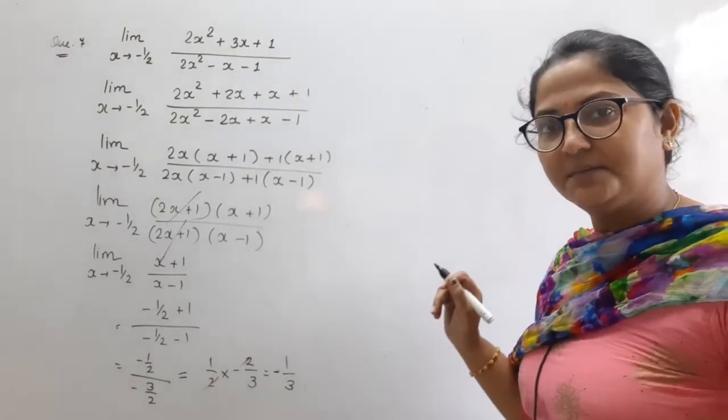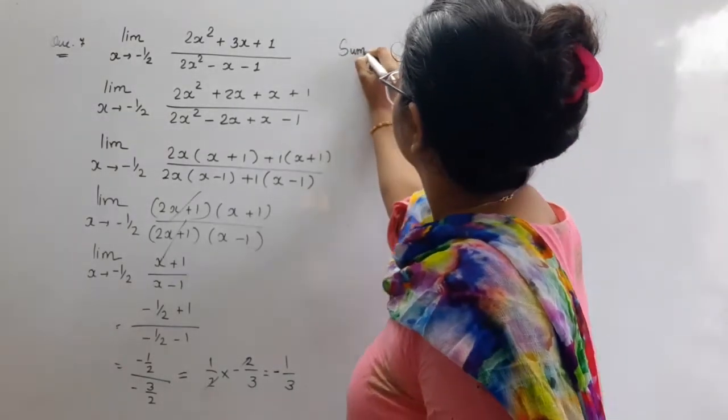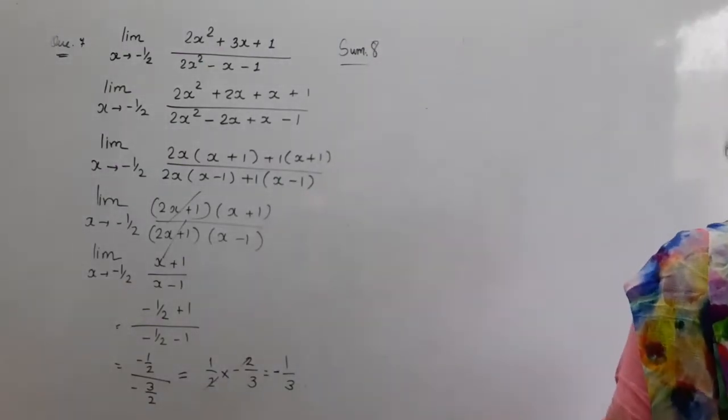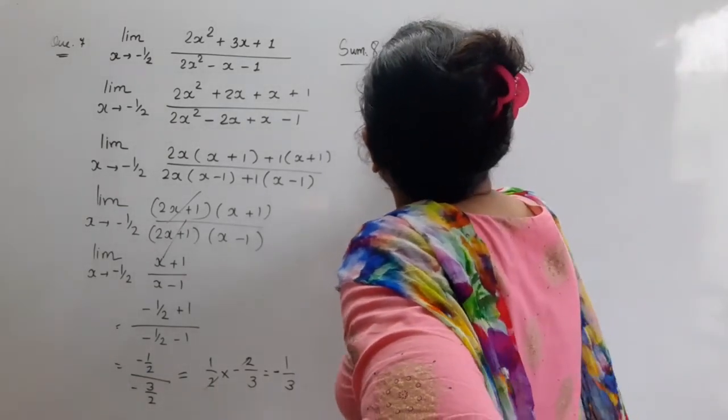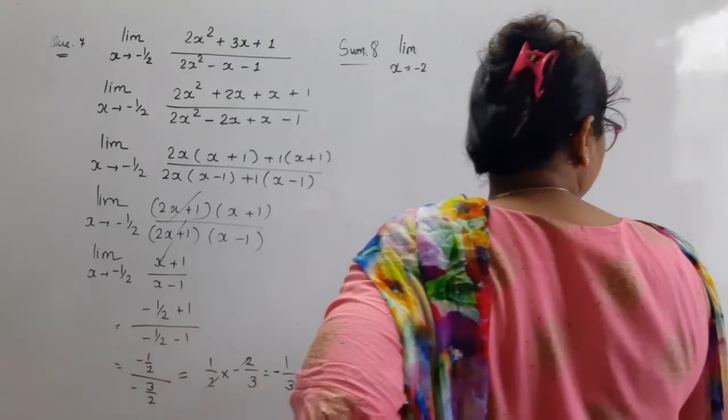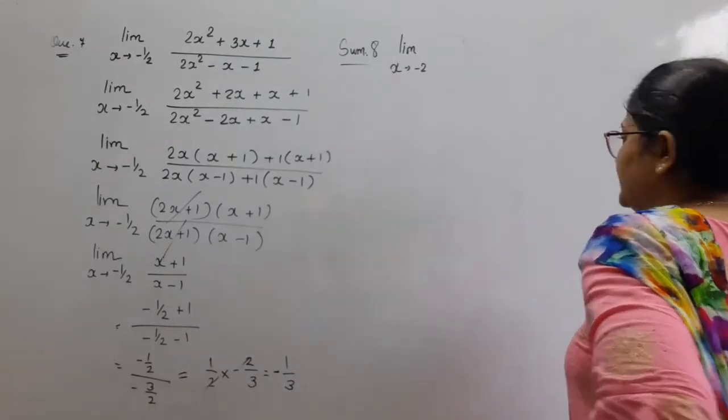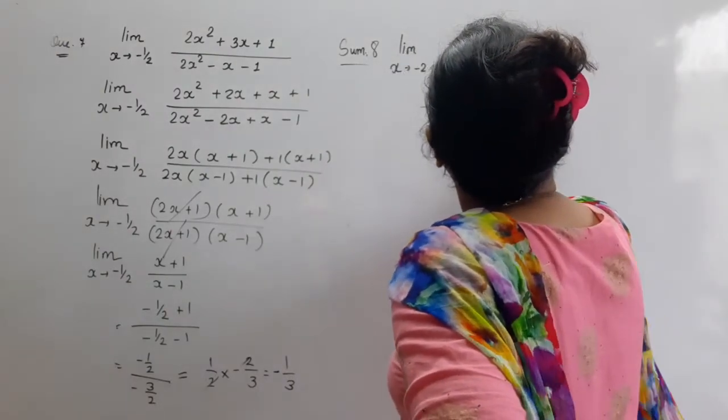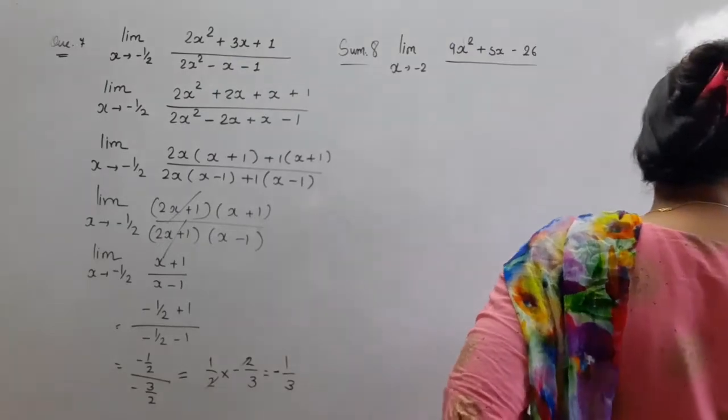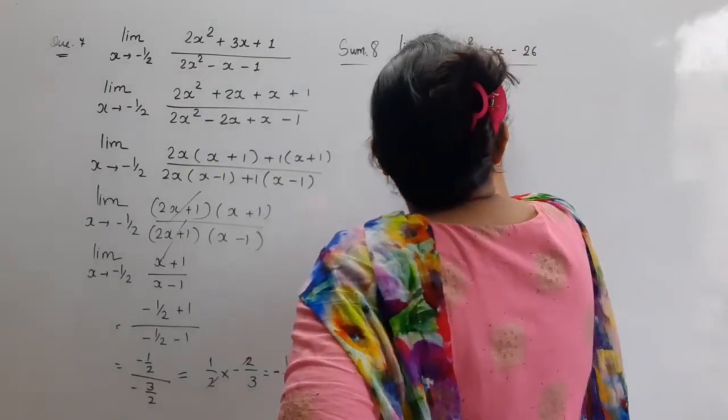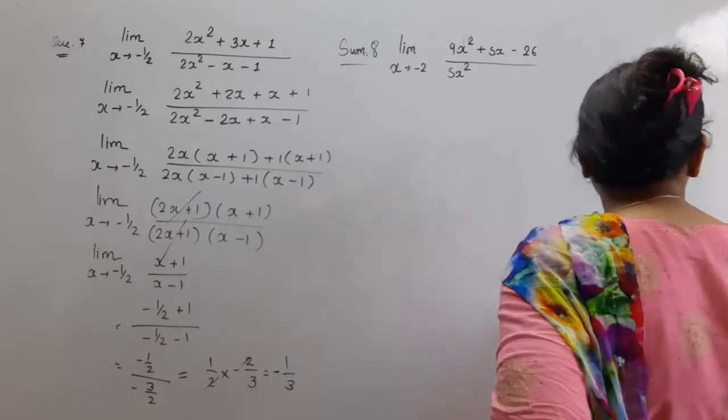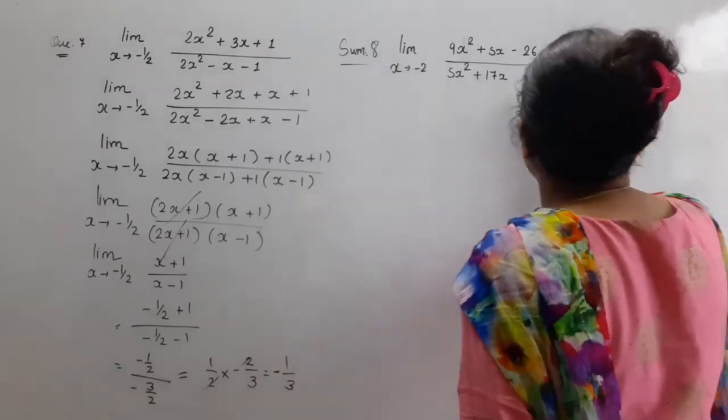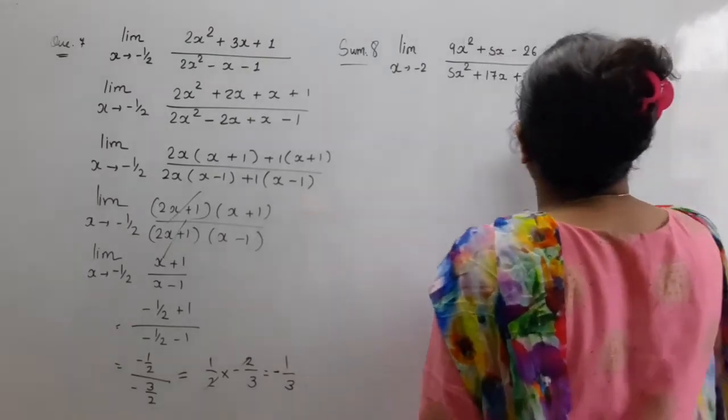Now let's do sum number 8. Sum number 8 me kya hai? Limit x tends to minus 2. 9x square. Sorry, pehle to hai limit, x tends to minus 2. 9x square plus 5x minus 26.